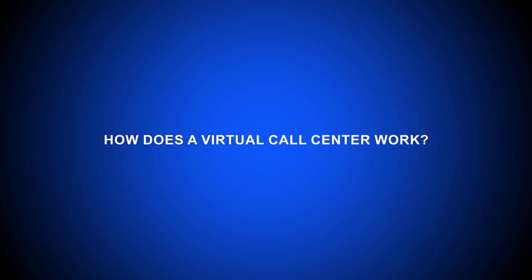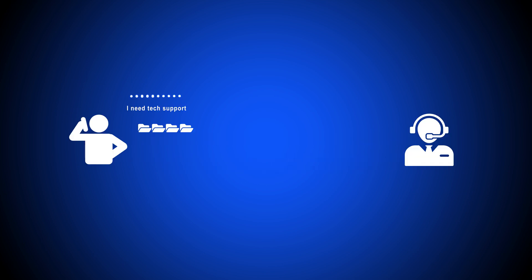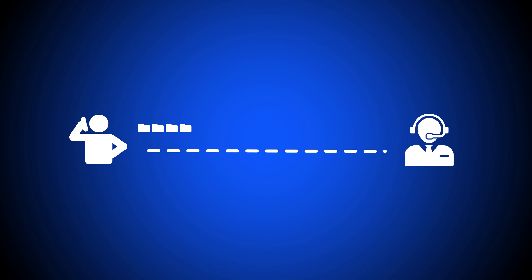A virtual call center works by using VoIP technology to make and receive telephone calls over the internet instead of the wired PSTN. When you make a call, VoIP phone systems immediately break up your voice audio or speech into numerous tiny digital data packets.